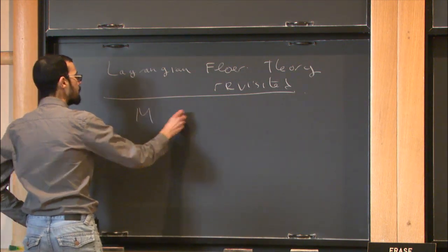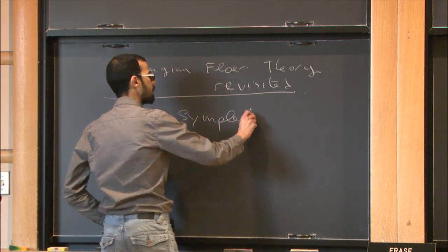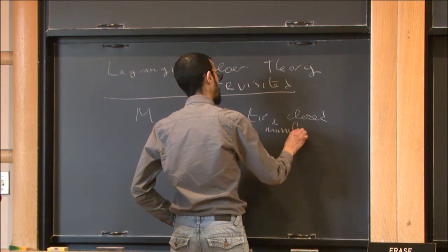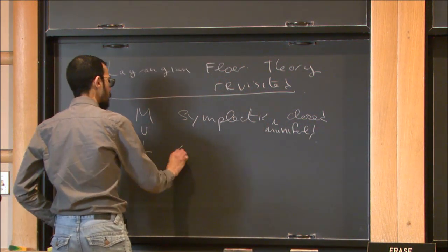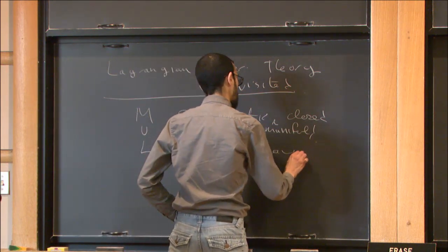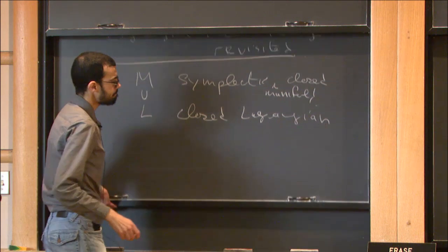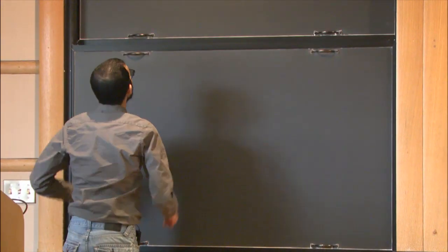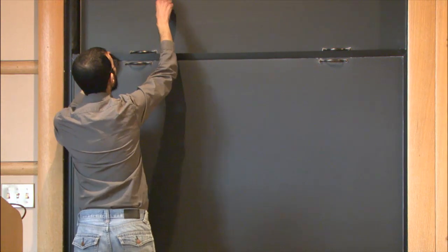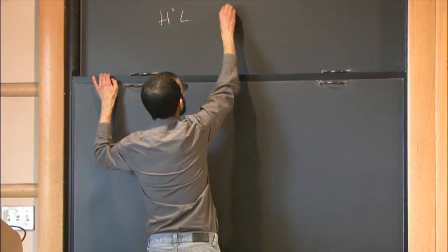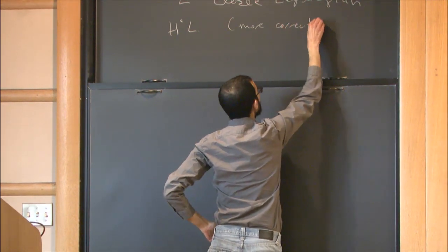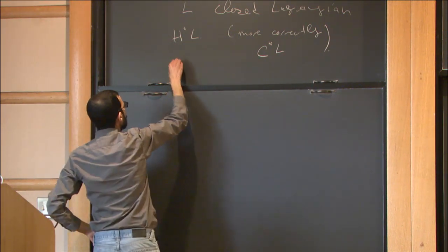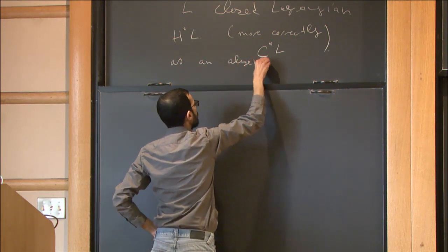The setup is that M is some symplectic manifold, with no assumptions except that it's closed, and L inside of M is a closed Lagrangian. We consider the cohomology of L, or more correctly, the cochains on L, as an algebra with the cup product.